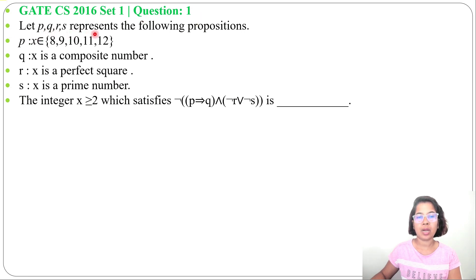Let P, Q, R, S represent the following propositions: P is X∈{8,9,10,11,12}, Q is X is a composite number, R is X is a perfect square, S is X is a prime number. The integer X ≥ 2 which satisfies ¬((P⇒Q) ∧ (¬R ∨ ¬S)) is ___.